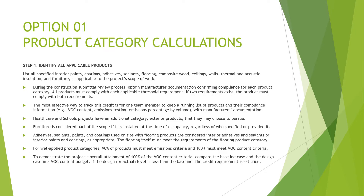For option one — product category calculations — step one is to identify all applicable products. List all specified interior paints, coatings, adhesives, sealants, flooring, composite wood, ceilings, walls, thermal and acoustic insulation, and furniture as applicable to the project scope. During the construction submittal review process, obtain manufacturer documentation confirming compliance for each product category. The most effective way to track this credit is for one team member to keep a running list of products and their compliance information. Healthcare and school projects have an additional category: exterior products. Furniture is considered part of scope if it is installed at the time of occupancy regardless of who specified or provided it.